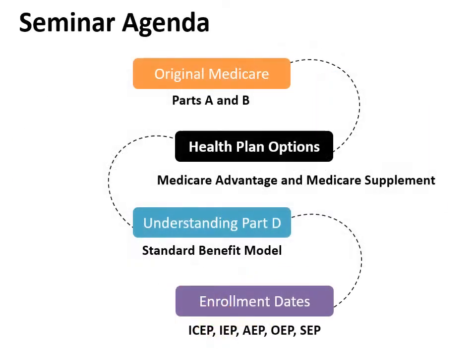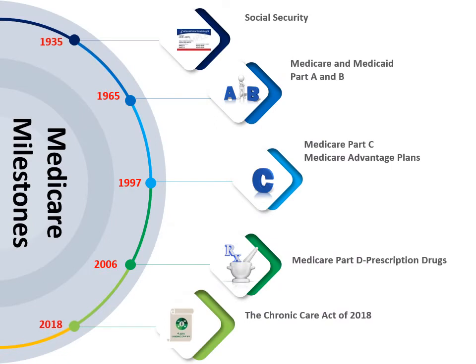Medicare is one of your two basic entitlement programs, Social Security being the other. Medicare provides you with basic health coverage; Social Security provides a level of income coverage. This seminar will help you understand the Medicare entitlement program and your Medicare benefits, including original Medicare, Medicare Advantage, Medicare supplement plans, Part D, and Medicare enrollment periods.